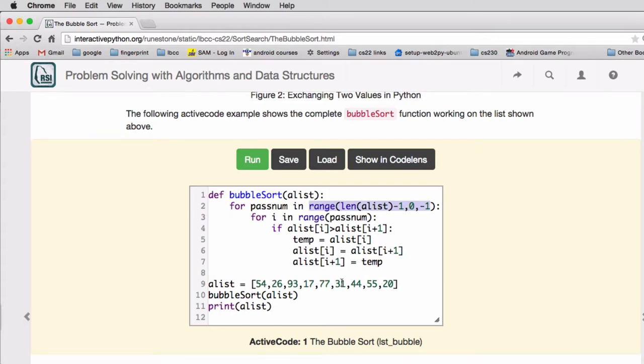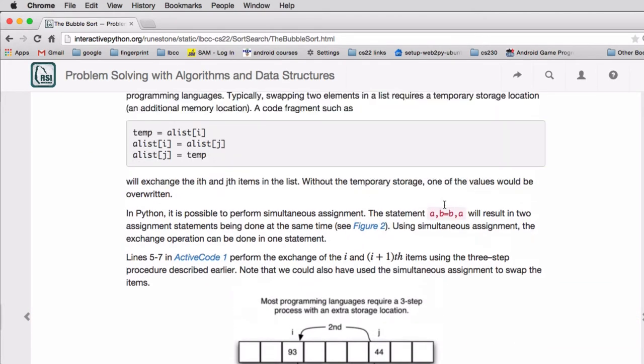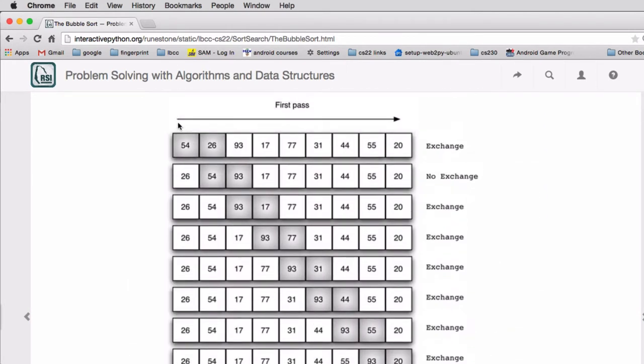If they're out of order it's going to swap them. This is the inner list in which this diagram just showed one pass of that list.